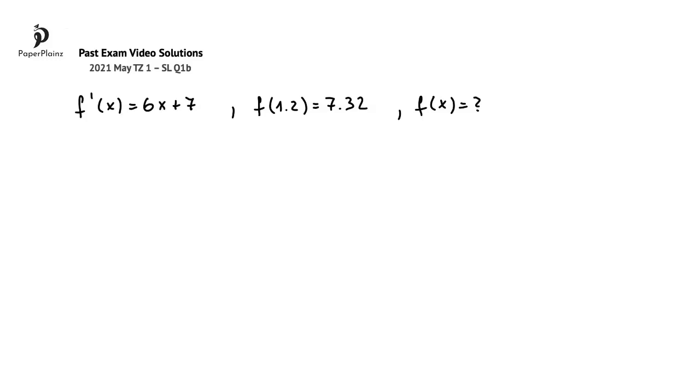In this question part, we are given that the derivative of fx is 6x plus 7. We are also told that f of 1.2 is equal to 7.32. We have to find fx.